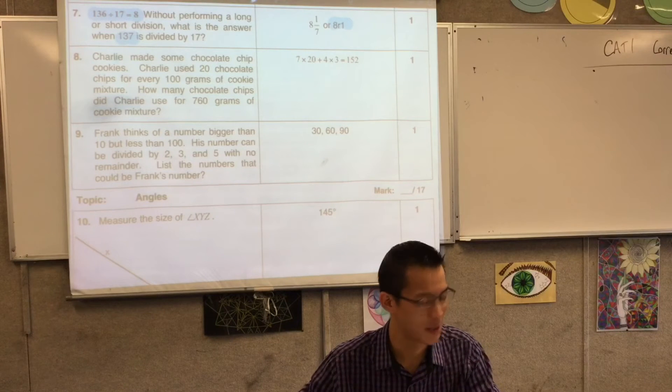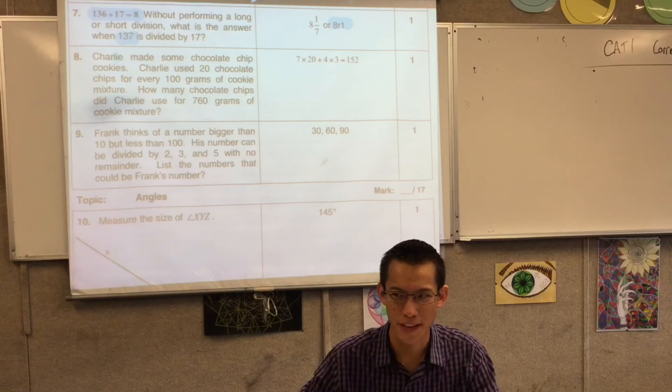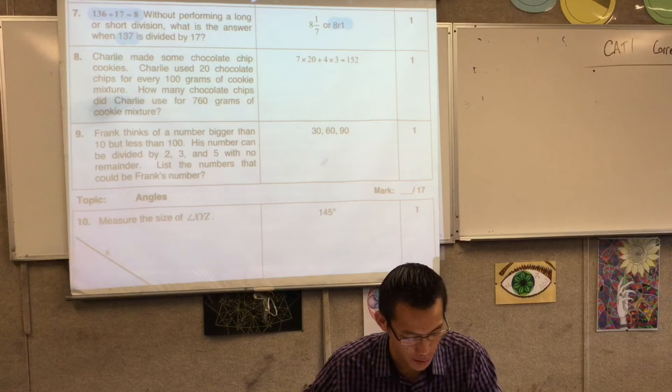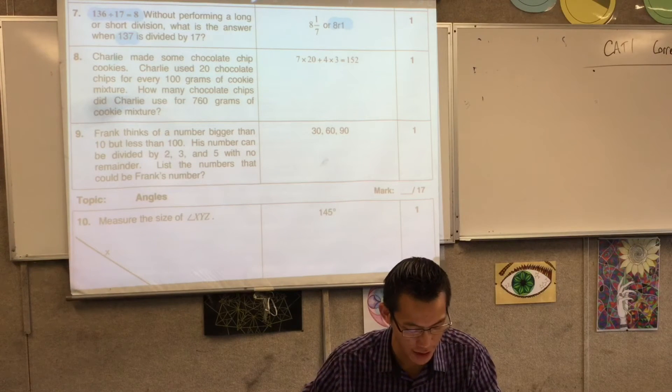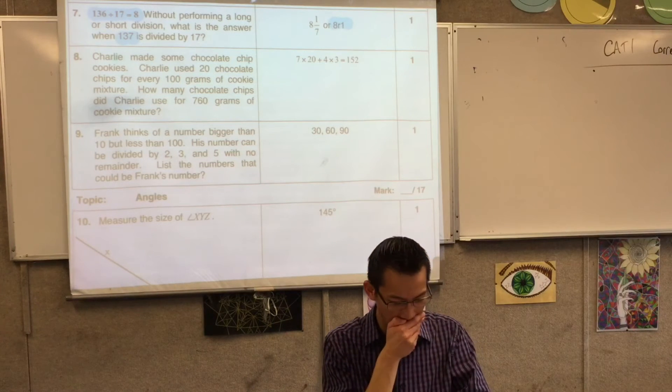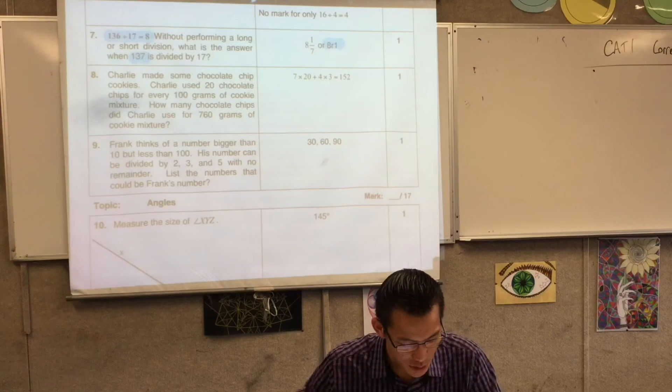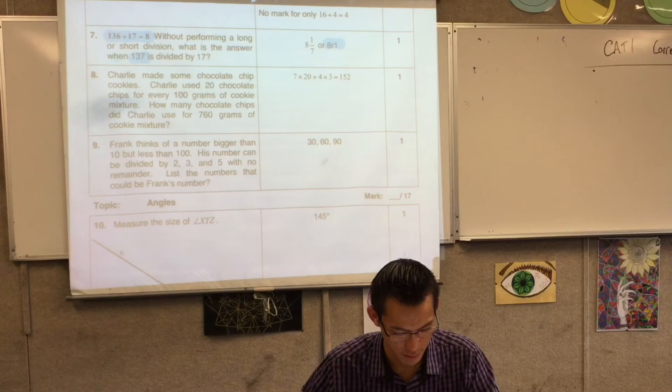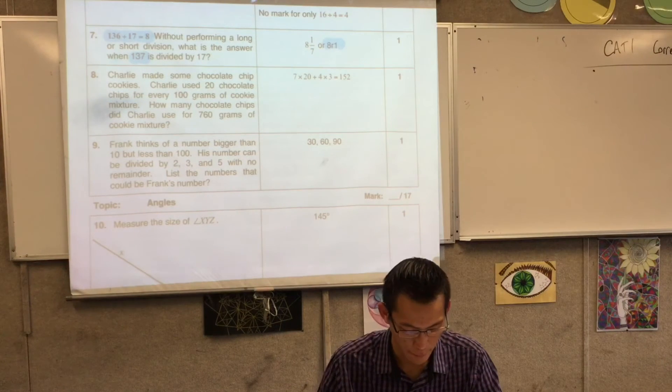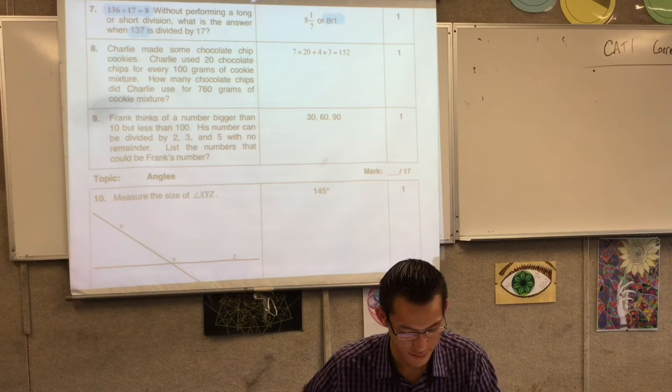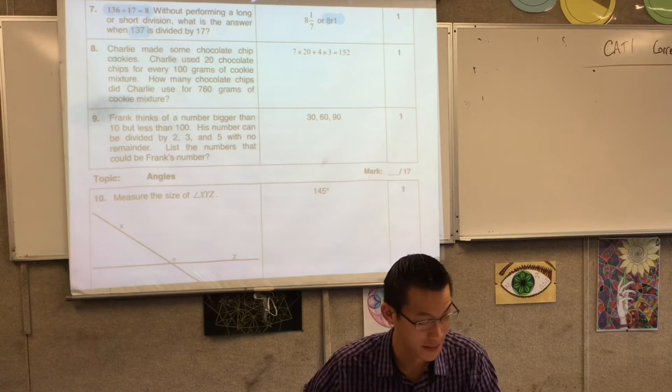By the way, if you didn't notice, this test features our class quite a lot. Charlie made some chocolate chip cookies. He used 20 gram chocolate chips for every 100 grams. How many chocolate chips did he use? Can you see the way the working is? Seven times 20 is 140. 760 grams. Do you follow the working that's there? You see it?